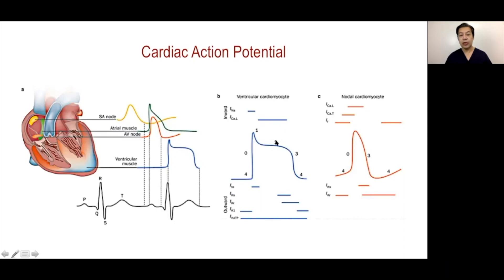The closure of the calcium channel is followed by the opening of the rapid potassium channel — the IKR — and then the slow potassium channel — the IKS — which allow potassium to exit, making the cell potential more negative as it returns to the resting membrane potential.